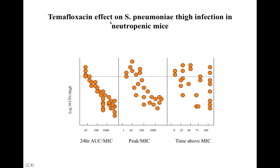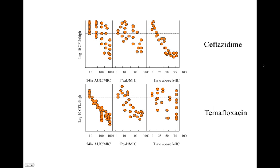Let's contrast this to temofloxacin, again in the thigh infection model in a neutropenic mouse infected with Strep pneumoniae. Here's where the strongest correlate is — the 24-hour area under the curve over MIC. So this is a concentration-dependent killer. What matters is getting lots of drug in, not so much the time above the MIC. You can have 100% of the time above the MIC, but if the concentration isn't high enough, you may still have very high colony-forming units. What's most important is AUC over MIC, and we also see a pretty good correlate with peak to MIC ratio. So ceftazidime is a time-dependent killer; temofloxacin is a concentration-dependent killer.